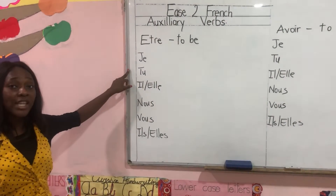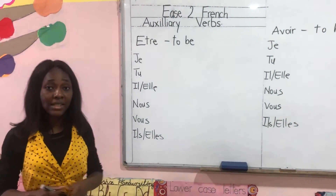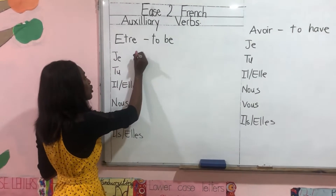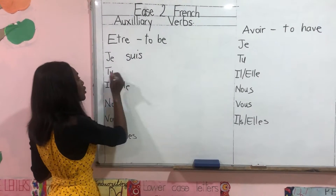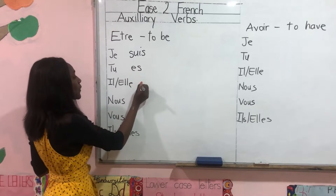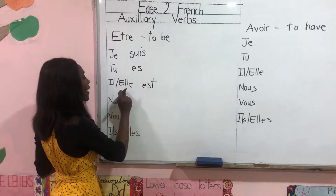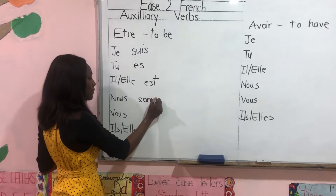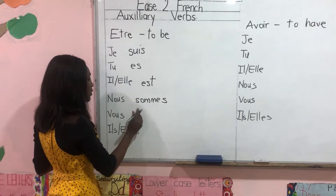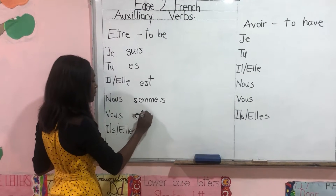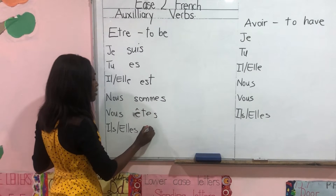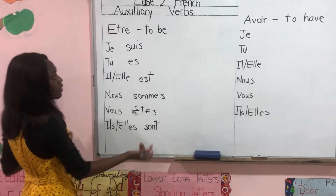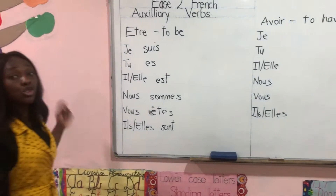Now how do you conjugate the verb être in present tense? Je goes with suis, tu es, il est, elle est, nous sommes, vous êtes, ils sont and elles sont.